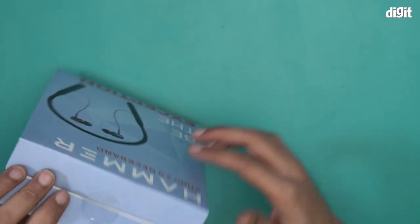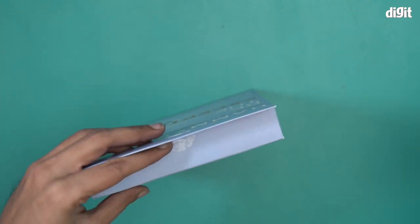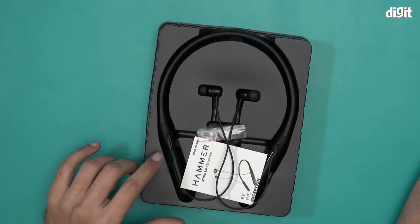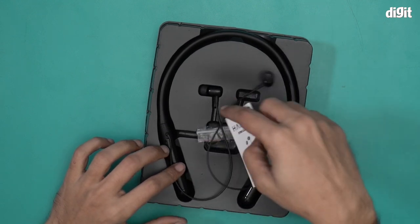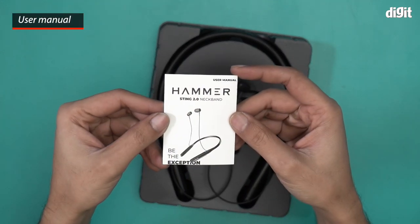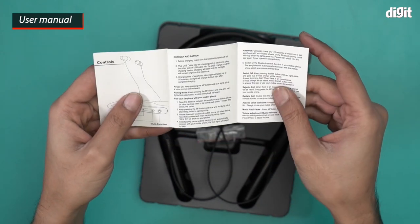I will open this box and show you what's inside. There you go, this is what you find inside the box. We have a user manual for the Hammer Sting 2.0 neckband. Everything that you want to know is mentioned over here.